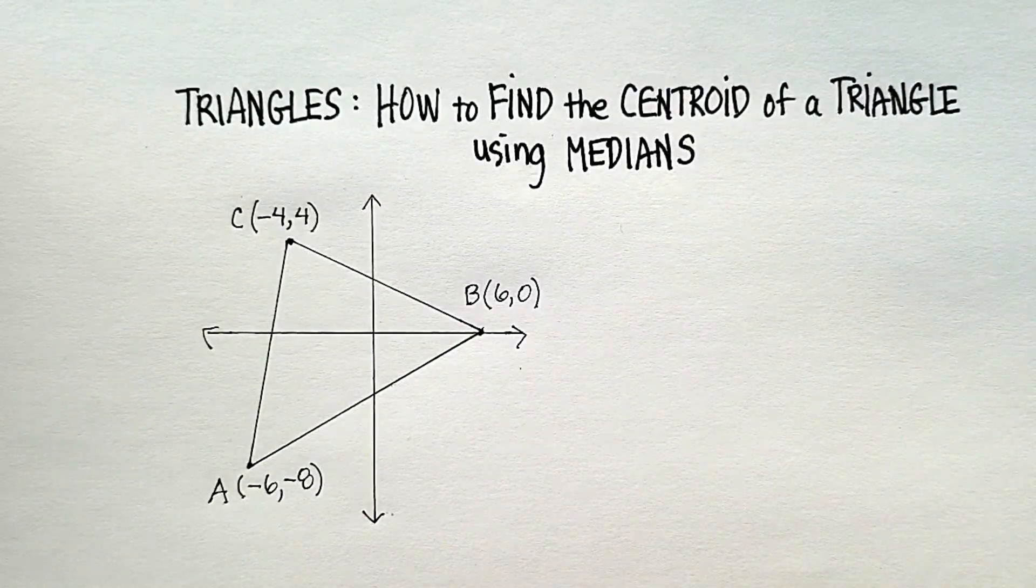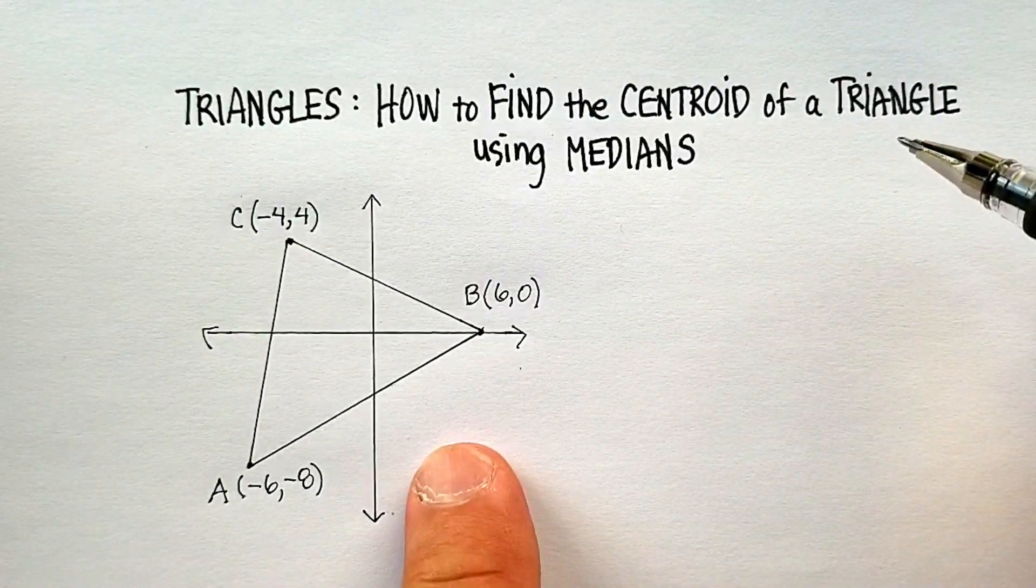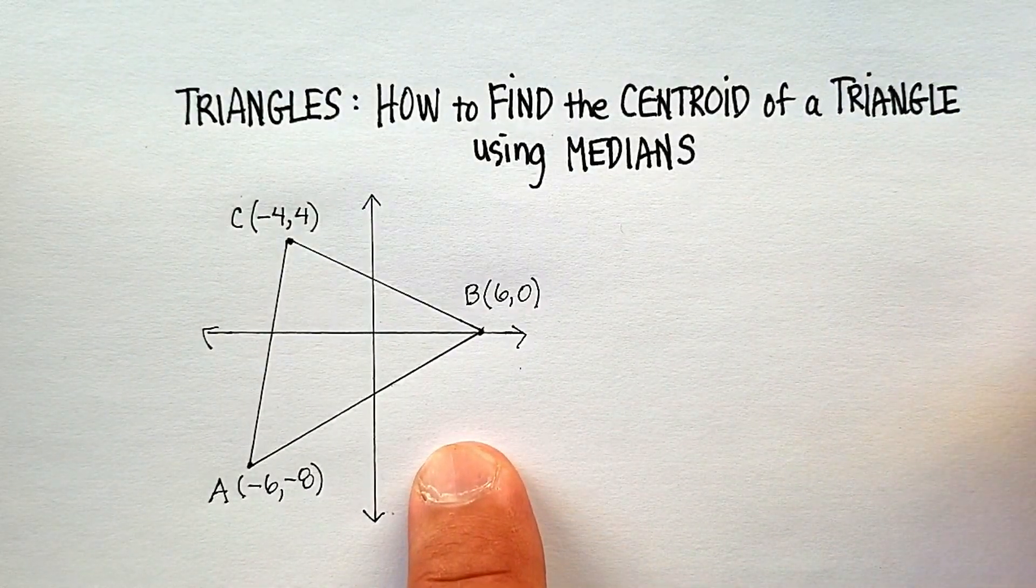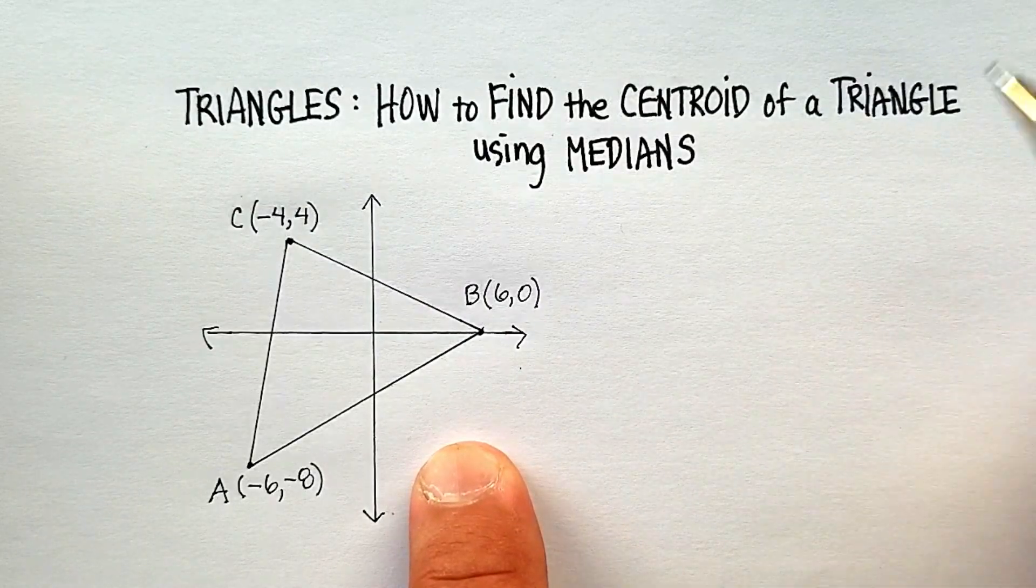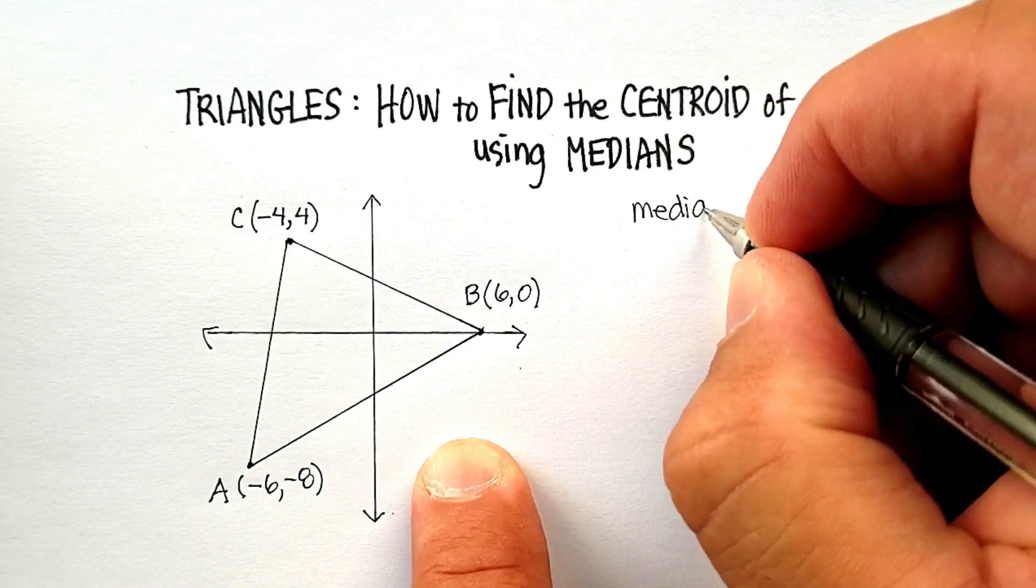Okay, in this video, we're going to find something called the centroid of a triangle using line segments called medians. Now, let's define some of those. What is a median, and then what is a centroid?